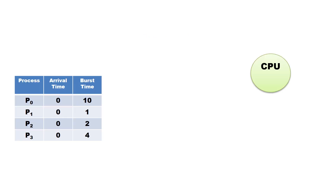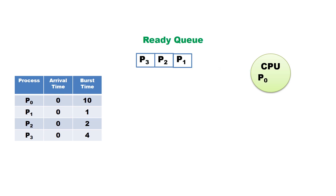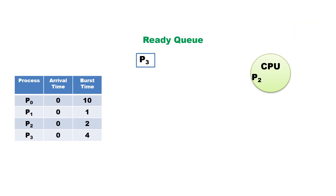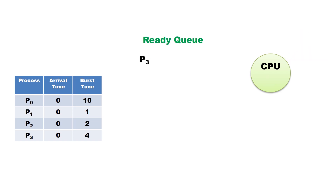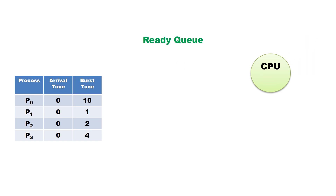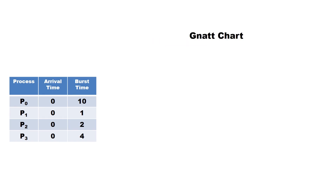Let us see how the processes are executed using FCFS scheduling. The processes are placed in the ready queue in the order they arrived. P0 requested the CPU first, so P0 gets the CPU first. After 10ms, P0 stops and releases the CPU; then P1 is allocated. After 1ms, P1 releases and P2 gets the CPU. P2 releases after 2ms, then P3 executes for 4ms and releases the CPU.